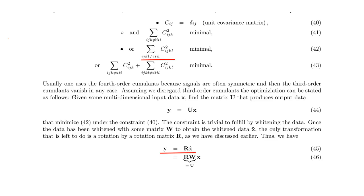We have seen that with the help of cumulants we can formulate an objective function for the ICA problem, and we will focus on this one, which is the most frequently used. We take the square sum over the fourth-order cross-cumulants; ideally, if all the components are independent of each other, this should be zero, and if they are not quite independent it is a positive value. So we want to minimize this, and we do this after whitening by rotating the whitened data. So x-hat is the whitened data, r is the rotation matrix, and y is our unmixed data.